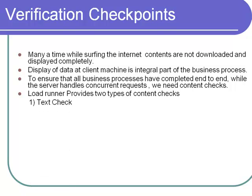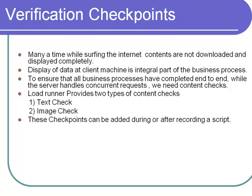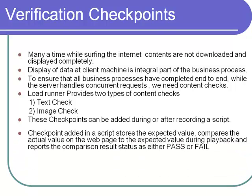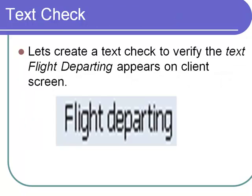The two types are Text Check and Image Check. These checkpoints can be added during or after recording a script. Checkpoints added in a script store the expected value, compare the actual value in the web page to the expected value during playback, and report the comparison result status as either pass or fail.